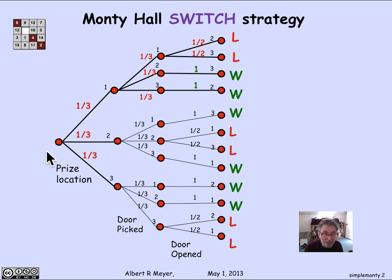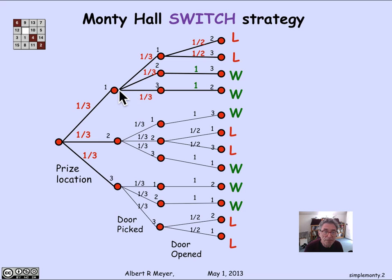That is, we literally thought of each of the three outcomes of whether the prize was behind door one, door two, or door three, and then exactly which door the contestant picked next — either door one, door two, or door three, and so on.